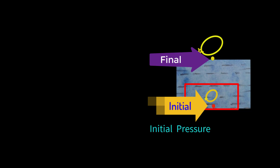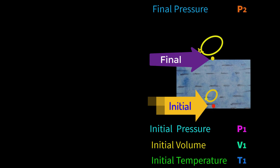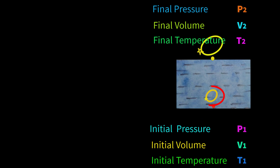The starting point will always be the initial and the reaching point will always be the final. Therefore, at this starting or initial point, each variable we get will be initial. The variables can be pressure, volume, or temperature. We consider initial pressure as P1, initial volume as V1, and initial temperature as T1. Similarly, at the final point we will get final pressure P2, final volume V2, and final temperature T2.